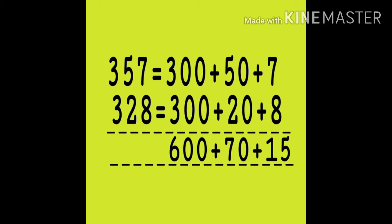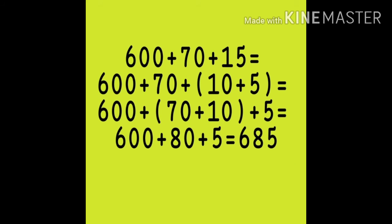Then let's come to the hundreds digit. 0 plus 0 equals to 0, and 3 plus 3 equals to 6, so 300 plus 300 equals to 600. Now let's add up these results: 600 plus 70 plus 15.